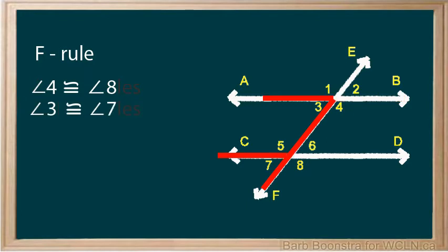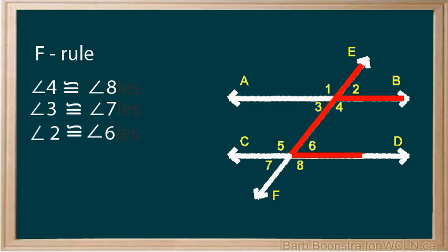Angles 3 and 7 form a backwards F. Angles 2 and 6 form an upside-down F.